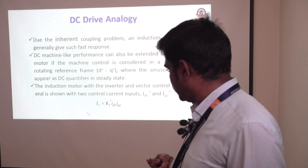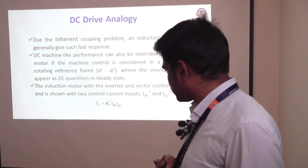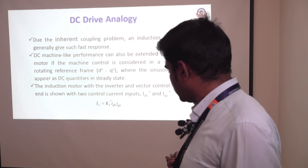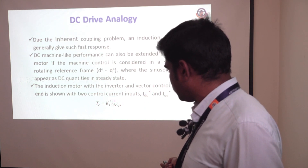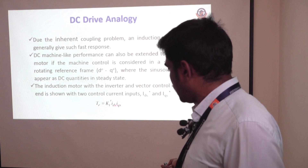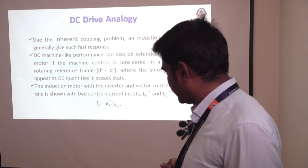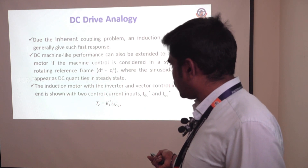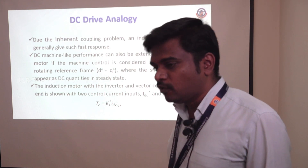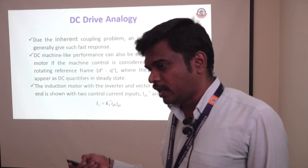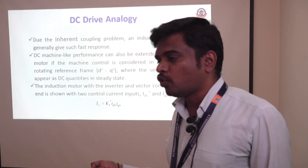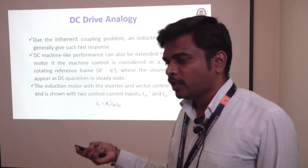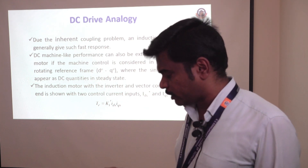The same analogy is followed in the induction motor — you can see the torque equation with direct axis and quadrature axis as the two control current components. IQS is in the quadrature axis and IDS is in the direct axis current of the induction motor. Here we are controlling the inverter, and by supplying the control currents to the inverter, we will have a controlled output for the induction motor.